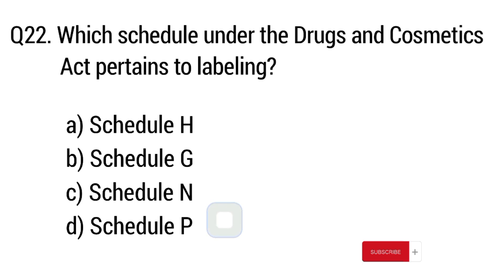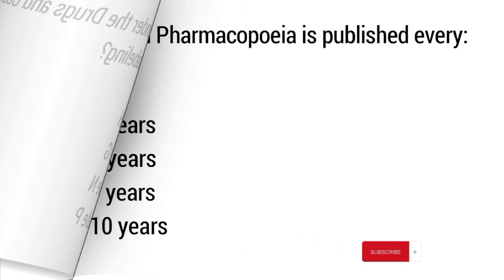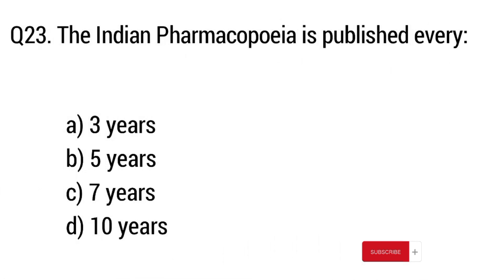Question number 23. The Indian Pharmacopoeia is published every how many years? The right answer is option B: Every 5 years.